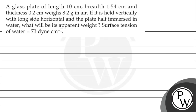Hello, so let's see the question. A glass plate of length 10 cm, breadth 1.54 cm, and thickness 0.2 cm weighs 8.2 gram in air. It is held vertically with the long side horizontal and the plate half immersed in water. We need to find its apparent weight. Surface tension of water is given as 73.5 dyne per centimeter.